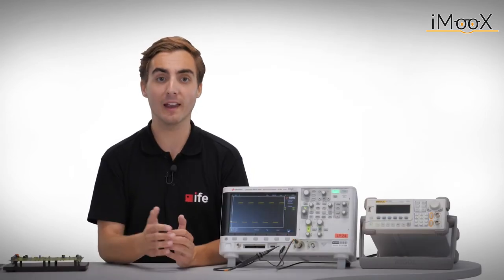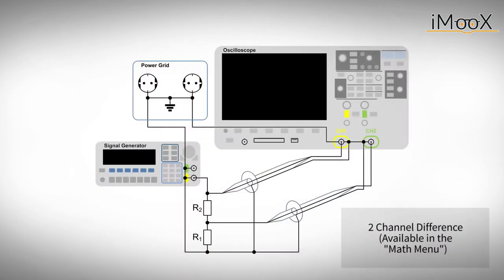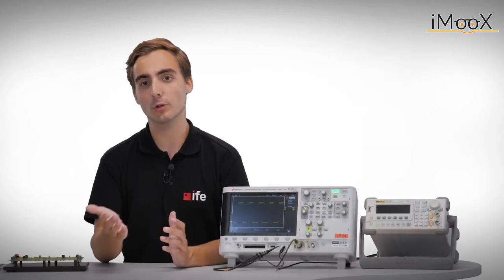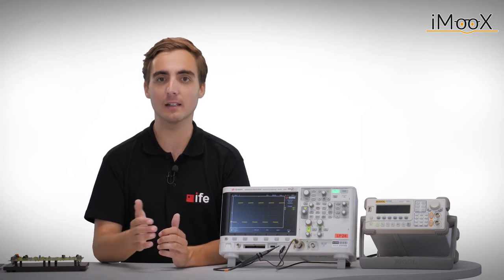In order to still be able to measure the voltage over R2, different approaches are possible. One possibility would be to use two channels, measuring the voltages with reference to ground, and subtracting one channel from the other. In order to do this, most scopes offer a math menu where you can do a simple subtraction of the voltages. We will show an example for this function later in the video.